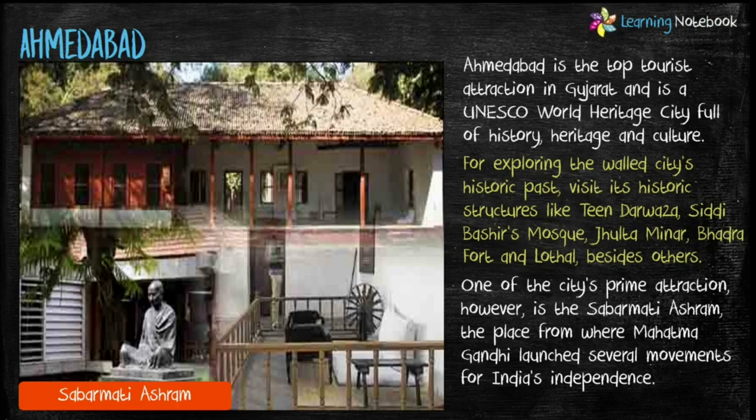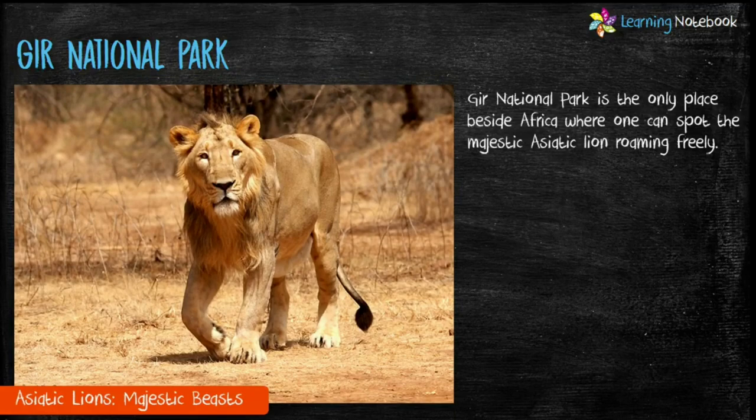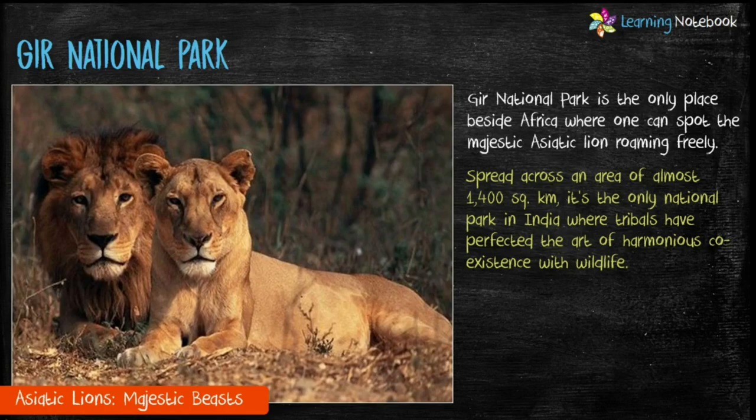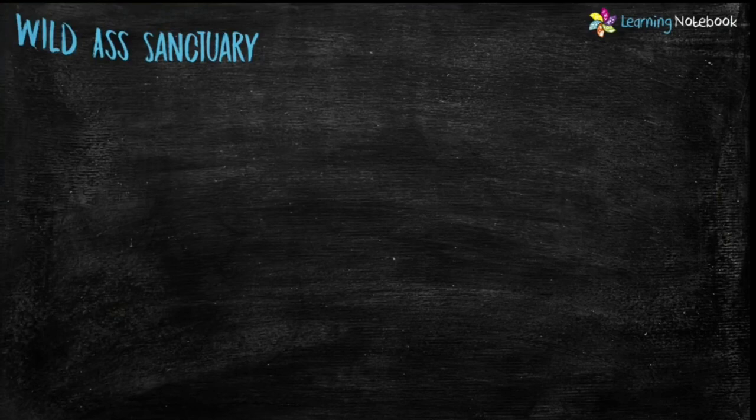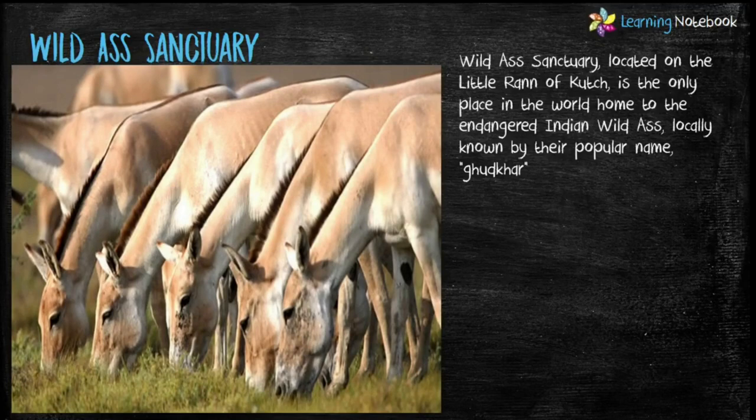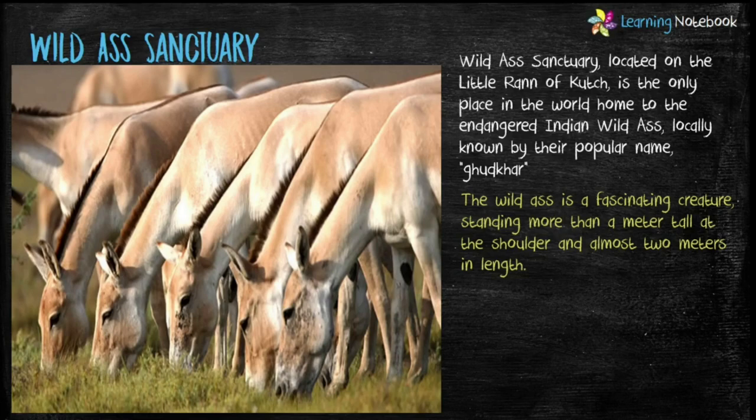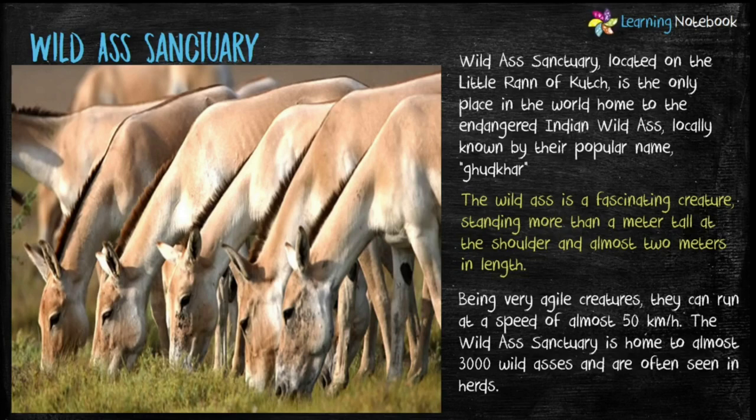The second famous place is Gir National Park. Gir National Park is the only place, besides Africa, where one can spot the majestic Asiatic lions roaming freely. Third place is the Wild Ass Sanctuary. It is located on the Little Rann of Kutch and is the only place in the world which is home to the endangered Indian wild ass, locally called Gudkar.